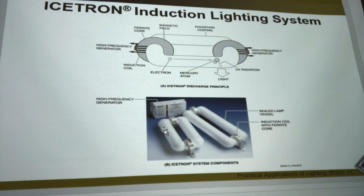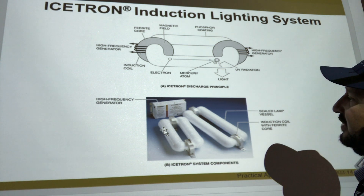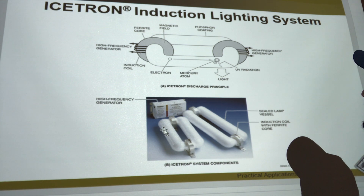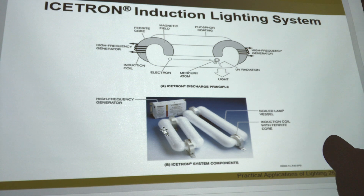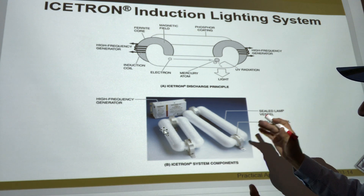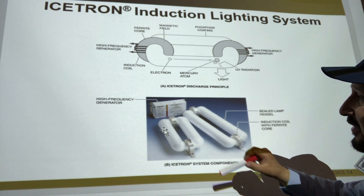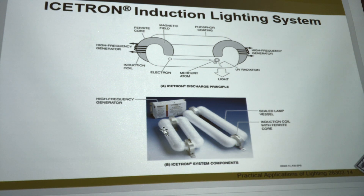I've worked with these a couple of times — they're brighter than fluorescent lighting but the same concept: you're electrifying mercury atoms and UV radiation, electrifying the gases inside to make it bright. This was way brighter than a fluorescent light. We used to use a lot of those — I haven't seen them in about five years now.